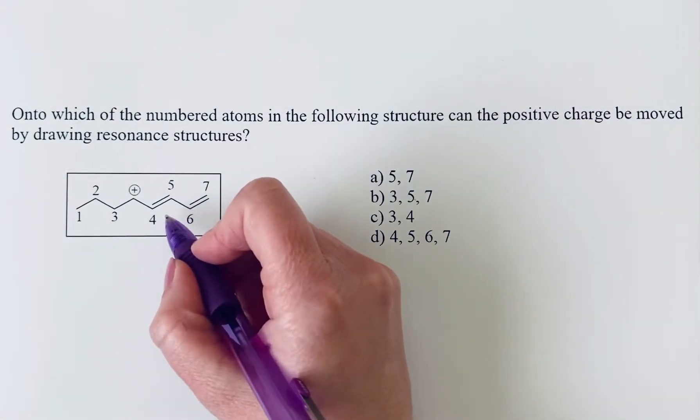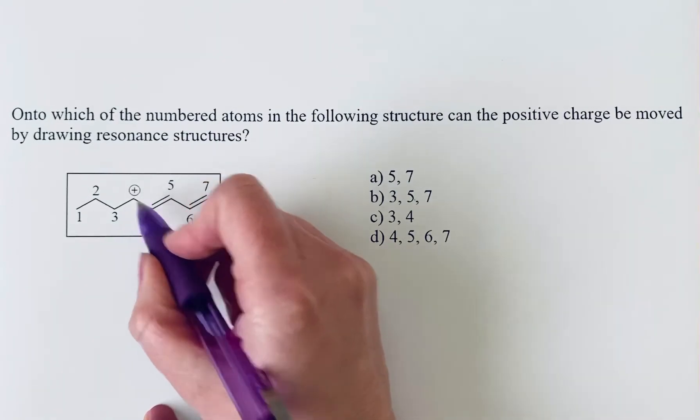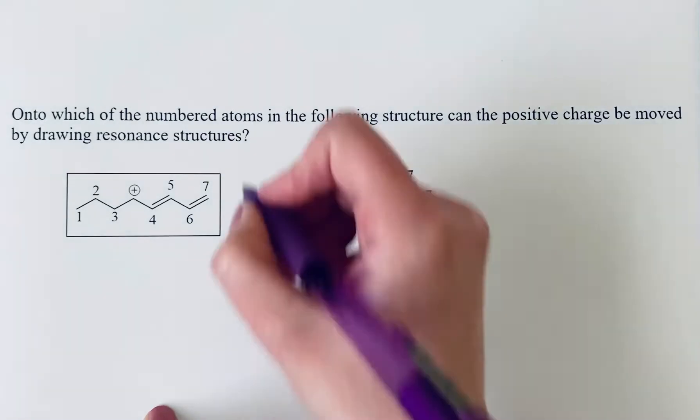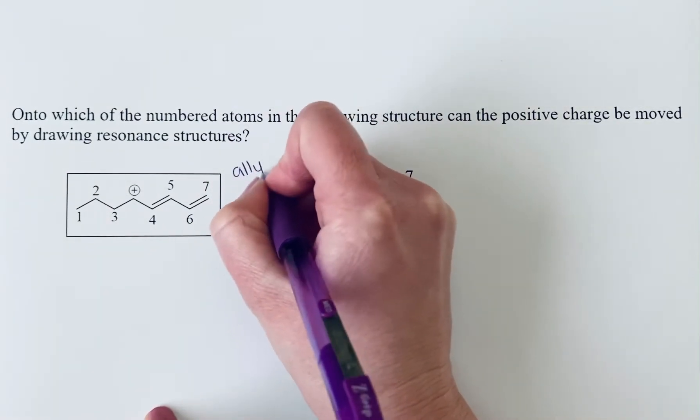So the pattern that we have here is that we have a cation and we have at the adjacent carbon atom a pi bond. So what we have here is an allylic cation.